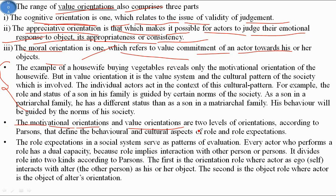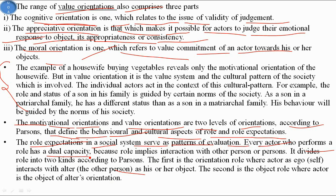According to Parsons, motivational orientation and value orientation — with their three parts each — are two levels of orientations that define the behavioral and cultural aspects of role or role expectations. Motivational orientation is also called the behavioral or motive aspect of society, and value orientation is called the cultural aspect of society. Role expectations in a social system serve as patterns of evaluation, and every actor who performs a role has a dual capacity as both ego and alter.